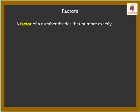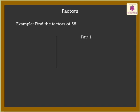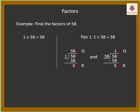Let us look at an example: find the factors of 58. The first pair is 1 times 58 equals 58. Here when we divide 58 by 1, we get the quotient as 58.